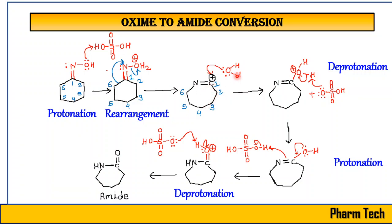This carbocation will be attacked by the water molecule, and you will get a protonated, hydrated form of this carbocation. Next, there will be a step of deprotonation. This deprotonation is caused by the conjugate base generated in the previous step. The proton will be abstracted, there is formation of H2SO4, and you will get the next intermediate.